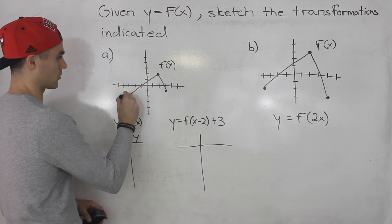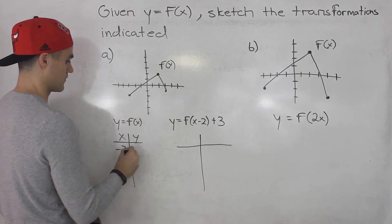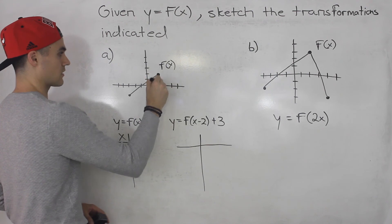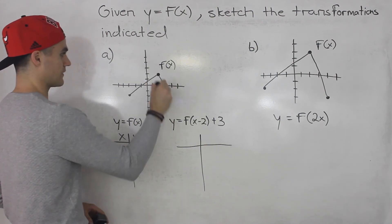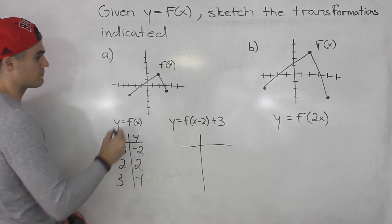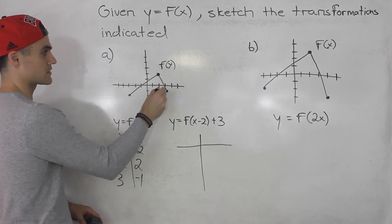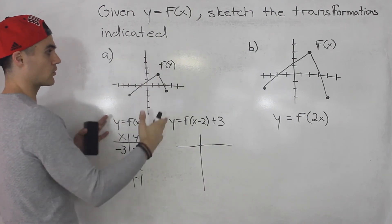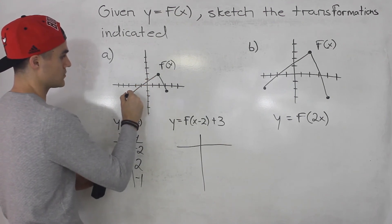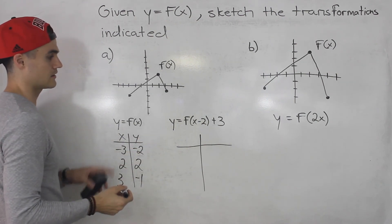Notice here that one corner point is negative three and negative two. The next corner point is two and two — notice that this is going to be a line. And then the next corner point is three and negative one. We can pick points in between as well, but it's easier to just deal with the corner points. When we transform them, you'll have three corner points again and then you can just connect them. You don't need any points in the middle as long as you have all of the corner points where the function is changing.